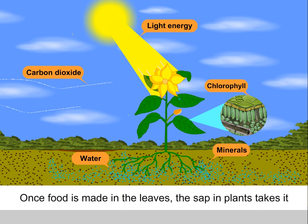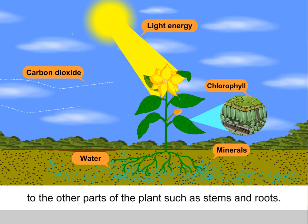Once food is made in the leaves, the sap in plants takes it to the other parts of the plant, such as stems and roots. Ninety percent of the food that we humans eat comes from just 30 varieties of plants.